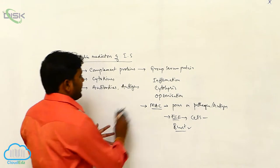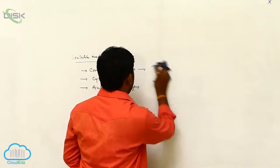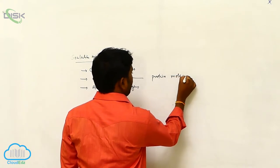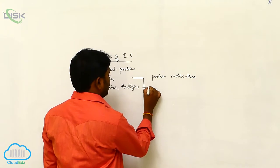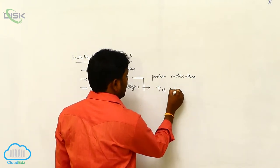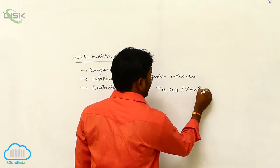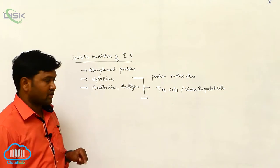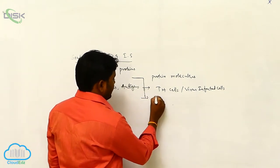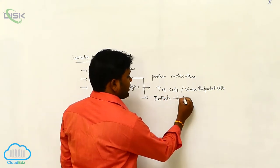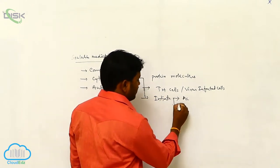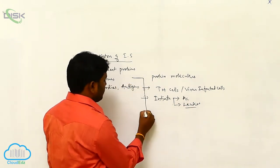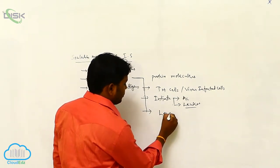Next, cytokines. Cytokines are small, soluble protein molecules produced or secreted by TH cells or virus-infected cells. These cytokines initiate the activation of the immune system and of leukocytes.